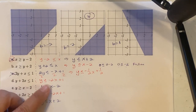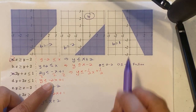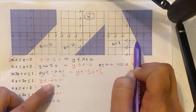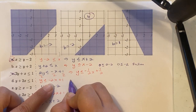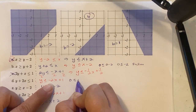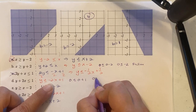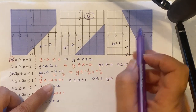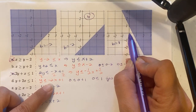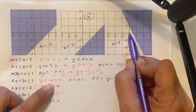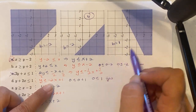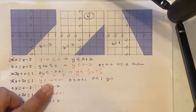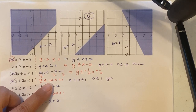For equation D: it starts at positive 1 and goes down 2 units over 1. Plugging in (0, 0): 0 ≤ 0 plus 1 — is 0 smaller than 1? Yes, that's true. Since (0, 0) is below the line and it worked, we should shade downward, but this graph shades upward. So D is not the equation for this graph.